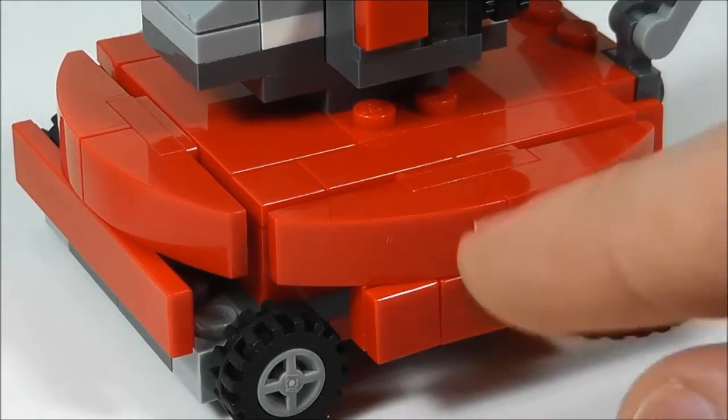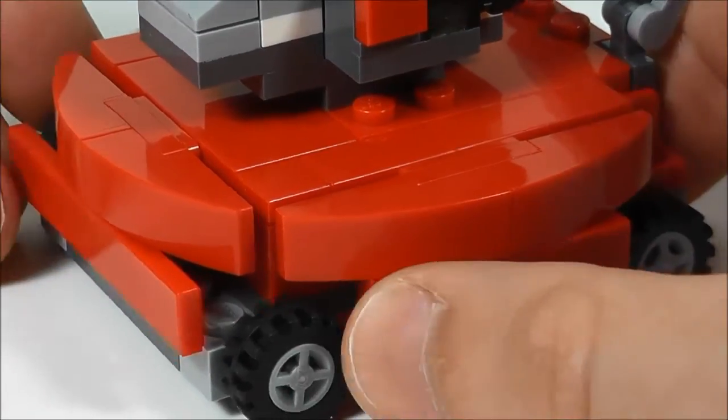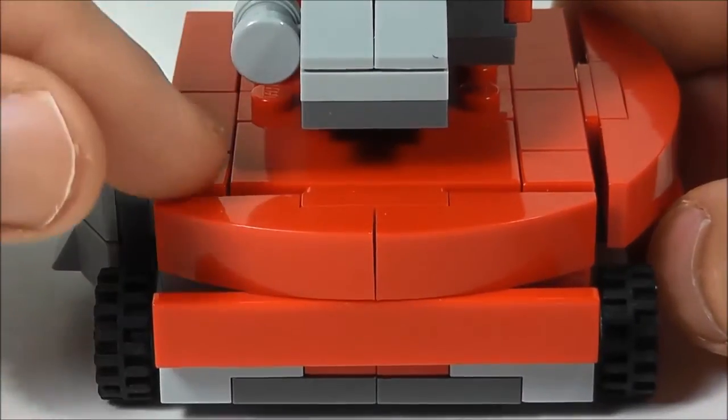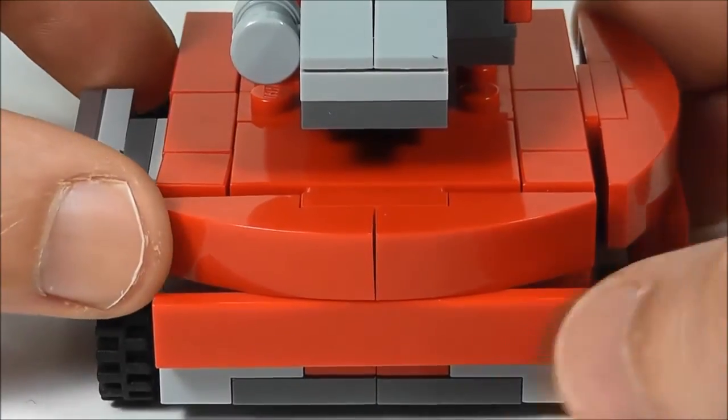So this side has a curve, and then it's kind of flat going around. And I did the same thing on the front. And you can see all the tiles on the top, which really make it look nice and clean.